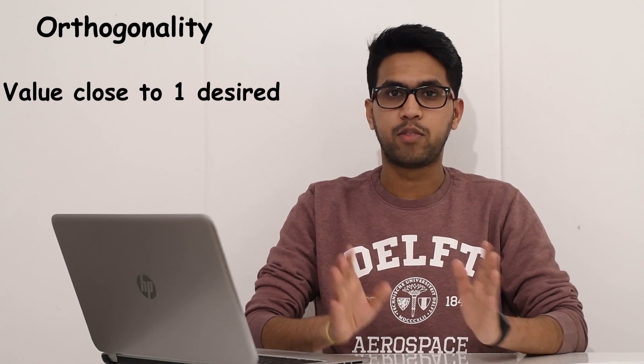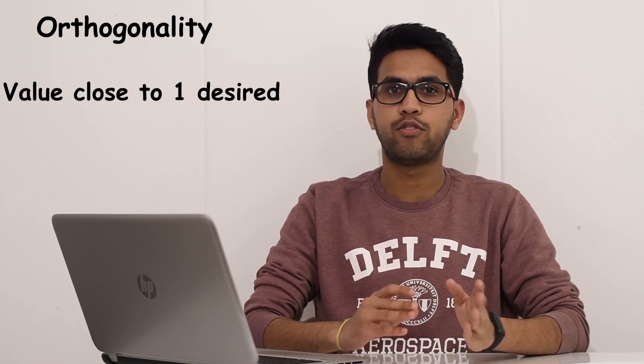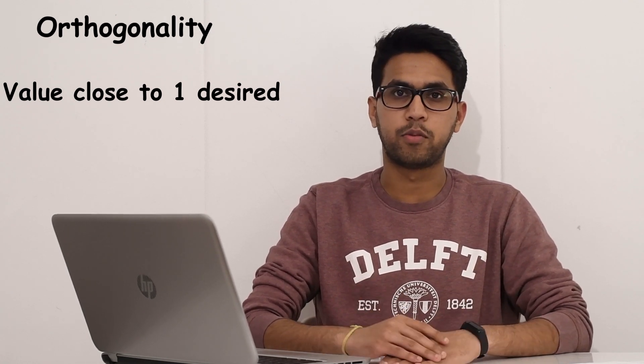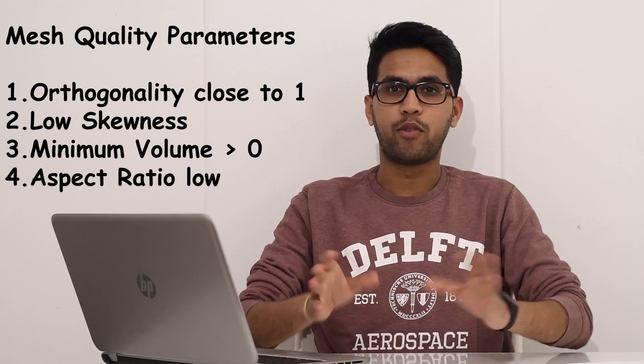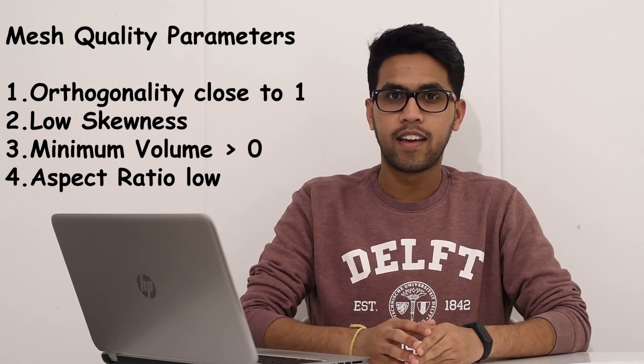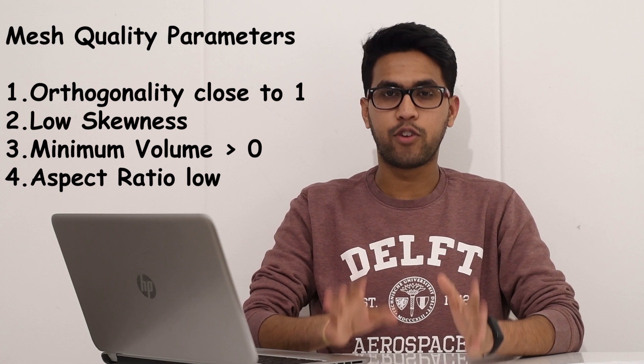Once the mesh is generated, the quality of the mesh has to be determined. Orthogonality is one of the quality checks that has to be performed every time. This has to be as close to 1 as possible. The next thing is the skewness of the mesh. This has to be as low as possible. The minimum volume of your mesh should be greater than zero. And also the aspect ratio of your mesh should be as low as possible.